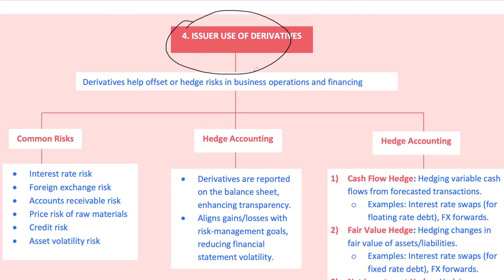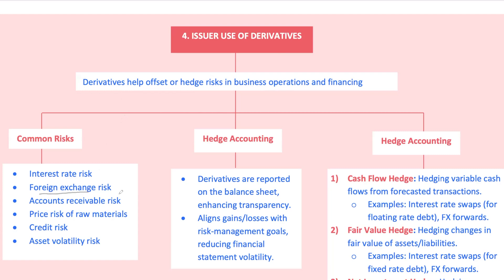So why do issuers — like companies — use derivatives? Primarily to hedge risks tied to their operations. Imagine a multinational company facing currency exposure on foreign sales, or an oil company vulnerable to crude price swings. Issuers can hedge interest rate risk with interest rate swaps, manage foreign exchange risk with currency forwards, or control raw material price risk with commodity futures. For issuers, hedge accounting has made using derivatives more transparent — the fair value of derivatives is reported on the balance sheet, aligning with risk management goals and reducing volatility in financial statements.